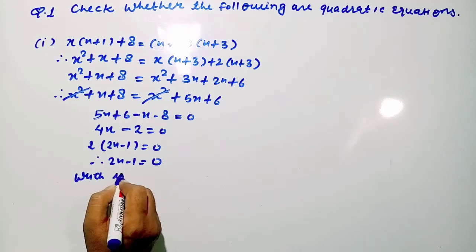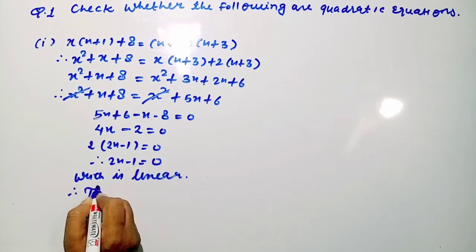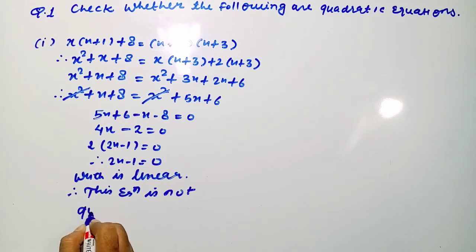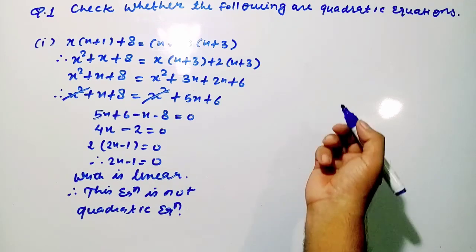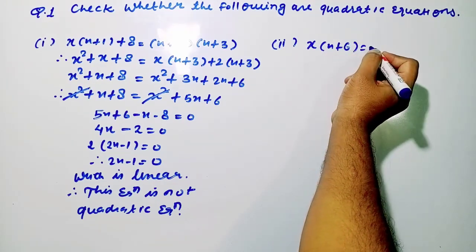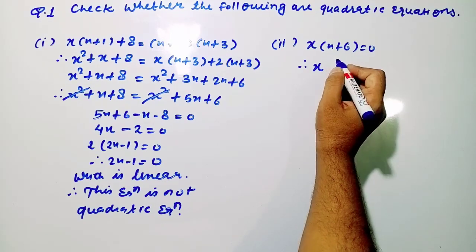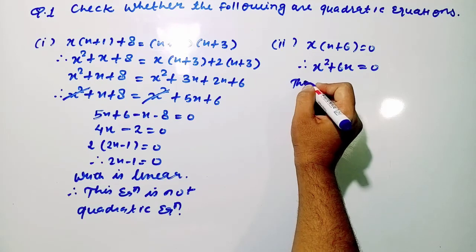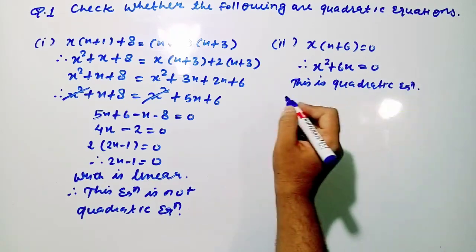Is it clear? Because this is a linear equation — its degree is 1. Moving to the next question: x(x + 6) = 0. Using the distributive property, we get x² + 6x = 0. The degree is 2, so this is a quadratic equation because this polynomial has degree 2.